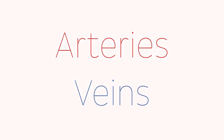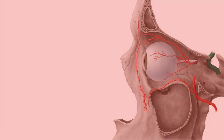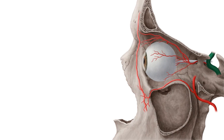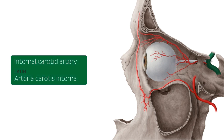We're going to start off with this one that you see here on the screen highlighted in green, because this is one of the main arteries of the orbit that will then offer the different branches that you're going to be seeing here. Now this one is known as the internal carotid artery. This is a major paired artery, so you have one on each side of your head, and in general this artery is going to be supplying the brain but gives off many branches which supply other areas.